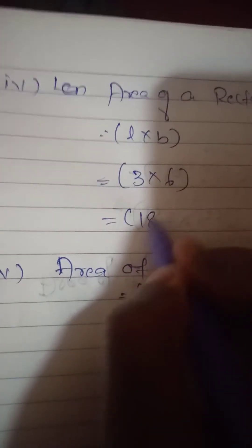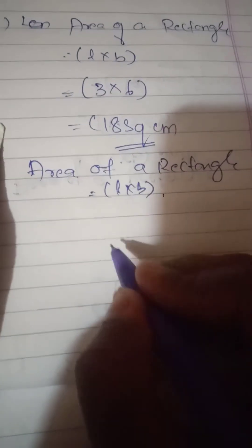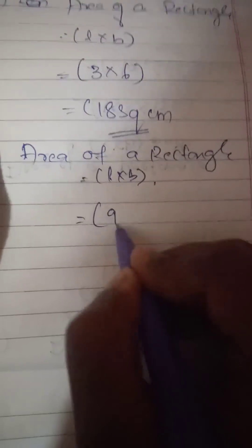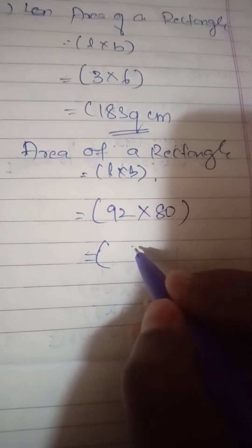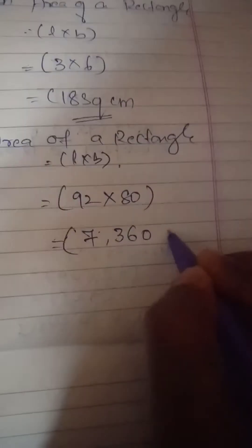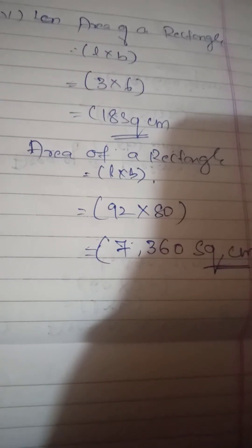Next: length is 3 centimeters and breadth is 6 centimeters. Area of rectangle equals 6 into 3 equals 18 square centimeters. Next: length is 92 centimeters and breadth is 80 centimeters. Area equals 92 into 80 equals 7,360 square centimeters.